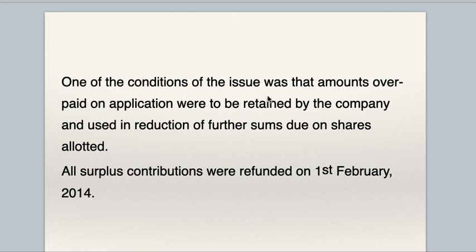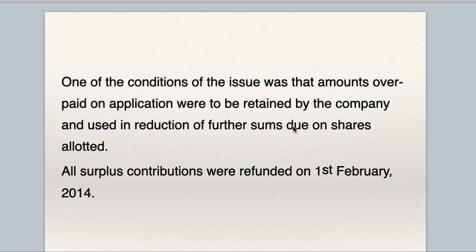One of the conditions of the issue was that amounts overpaid on application were to be retained by the company and used in reduction of further sums due on shares allotted. All surplus contributions were refunded on 1st February. So, the condition is that if the company receives more on application, it will retain and adjust further sums due on shares — that is allotment and first and final call. After adjusting all the money due, if any surplus remains, the company is supposed to refund it on 1st February.